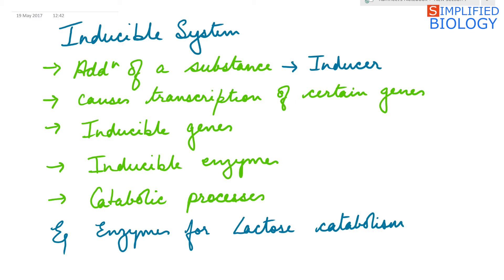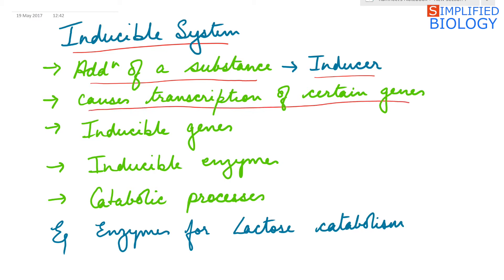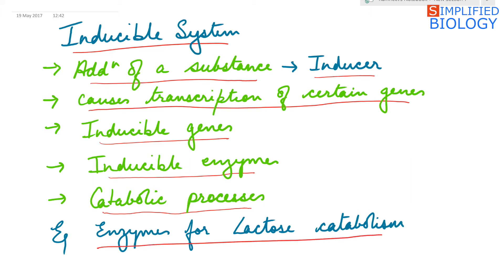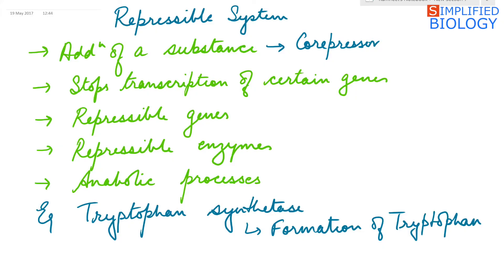In the inducible system, addition of a substance called the inducer causes transcription of certain genes. These genes are known as inducible genes. Their products are inducible enzymes, and they are always associated with catabolic processes. The example is the enzyme required for lactose catabolism, which we will study in lac operon.